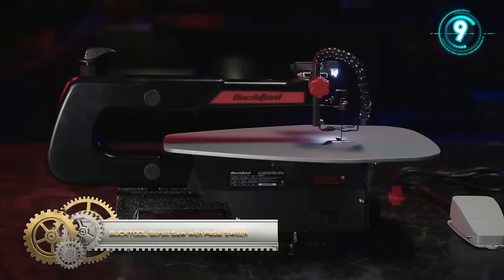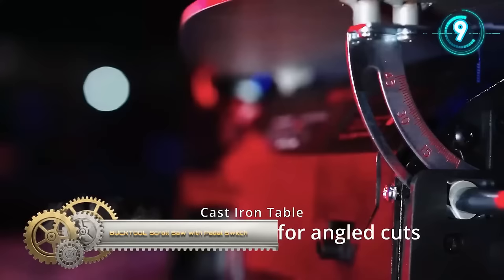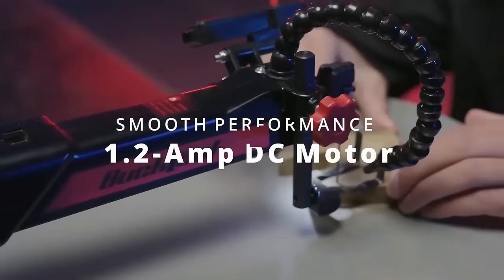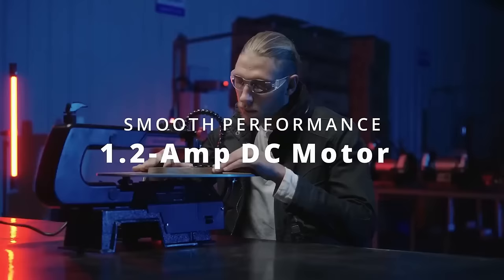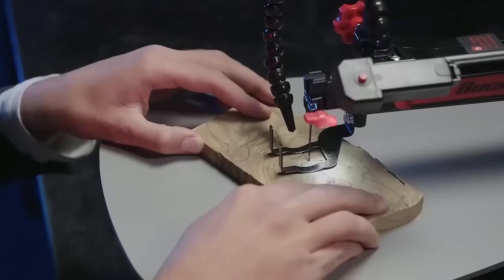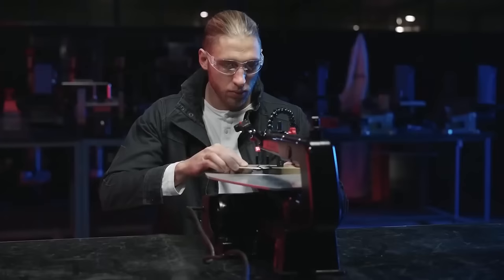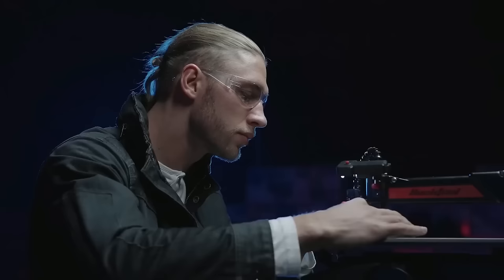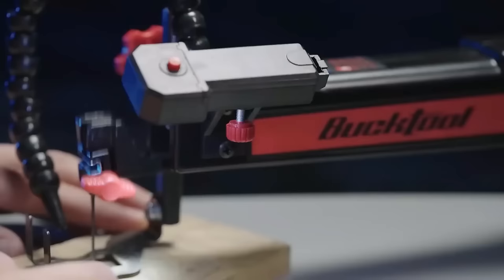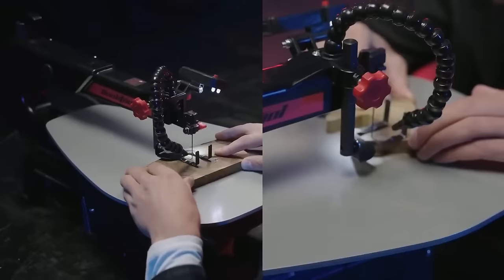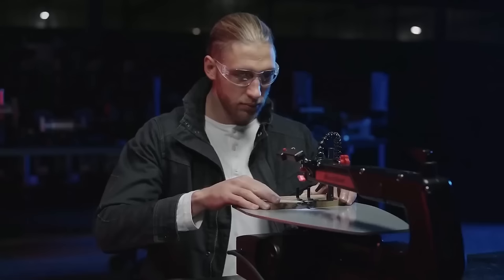The Bucktool Quick Blade change 16-inch variable speed scroll saw with pedal switch for woodworking. The steel work table is a versatile and efficient tool for woodworking projects. Its quick blade change system allows for easy blade replacement and the variable speed control adapts to different materials. The convenient pedal switch offers hands-free operation, enhancing safety and control. The durable steel work table provides stability for precision work. This scroll saw excels at intricate cuts, curved and circular designs, and wood resizing, making it an ideal choice for various woodworking tasks. With its user-friendly features and value for money, the Bucktool Scroll Saw is a valuable addition to any woodworker's tool kit.